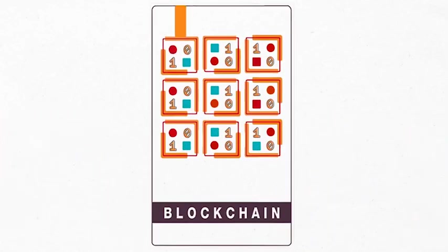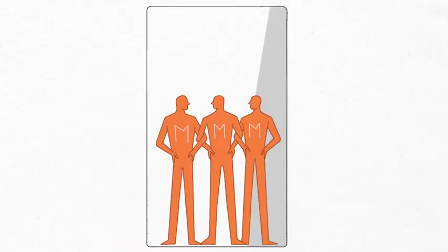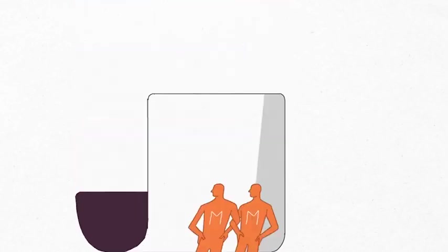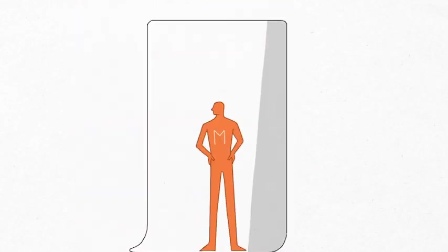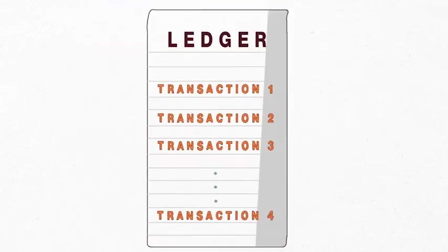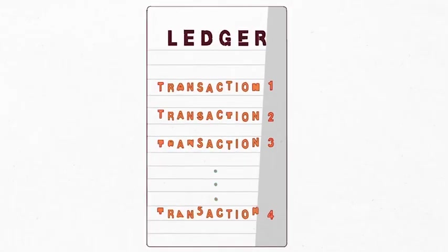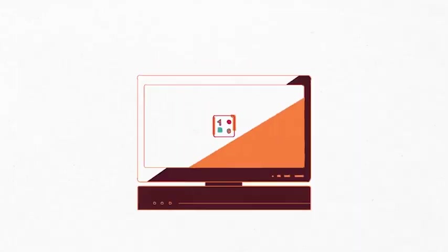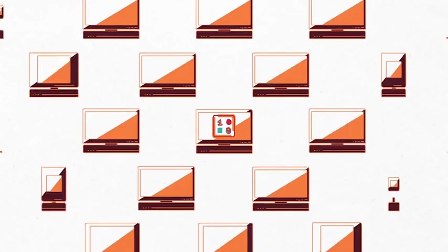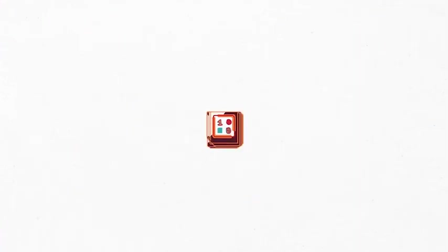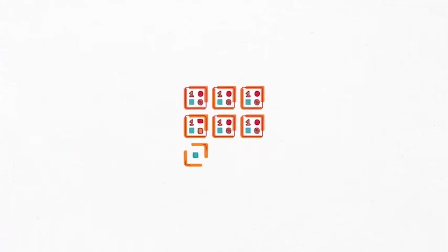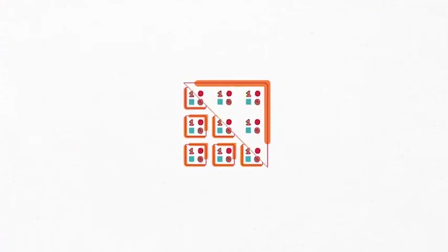One last thing: the future of disintermediation is blockchain. Cryptocurrencies are based on blockchain technology, so when Sonny mentions cryptocurrency, he is a middleman talking about a tool that will ultimately destroy middlemen — how ironic. We will cover this in detail in the future.